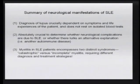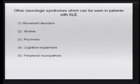These are some other neurological syndromes which can be seen in patients with lupus — requiring the same diagnostic paradigm — including movement disorders, strokes, psychosis, cognitive impairment, and peripheral neuropathies.